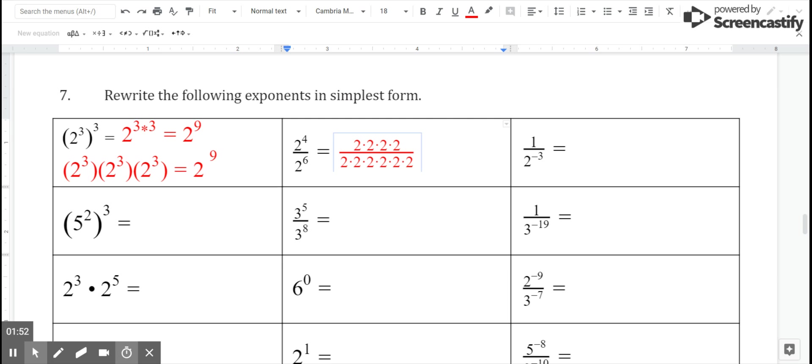If I cancel out common factors, I've got four twos in the denominator that also appear in the numerator, right? One, two, three, four in each.